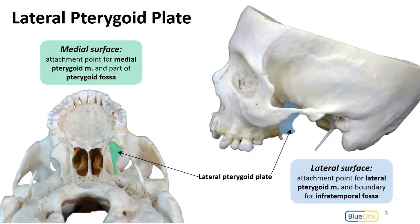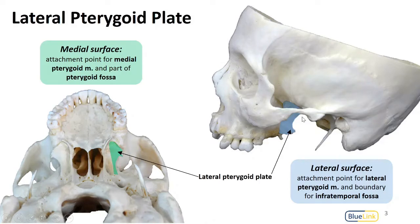Let's start with the lateral pterygoid plate. This is something that might be a little bit more familiar as we've talked about it with the medial and lateral pterygoid muscle attachments. We see here on this image that the lateral surface is where we find the attachment of the lateral pterygoid muscle on the lateral pterygoid plate. This is also a boundary for the infratemporal fossa, so you can imagine the space lateral to this being that infratemporal fossa.